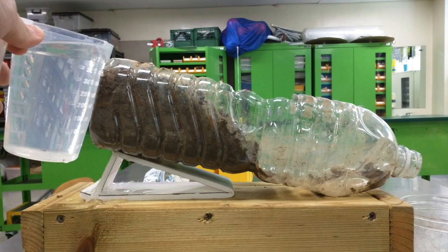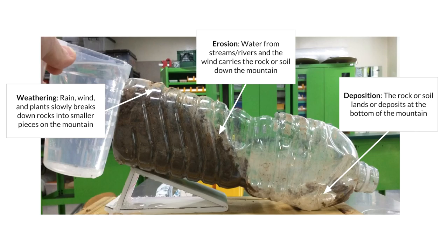To help students get a better understanding of these concepts, we did a quick learning activity using dirt, water, and a plastic bottle. Students made a mound of dirt in a plastic bottle and placed it on a slant. They then blew on the mound of dirt and poured water to demonstrate weathering. The water and wind carried down the dirt, demonstrating erosion, and it finally deposited at the end of the bottle, demonstrating deposition.